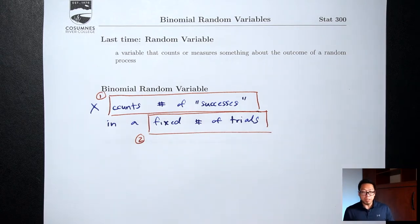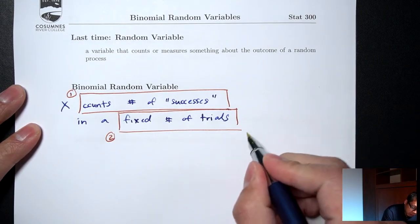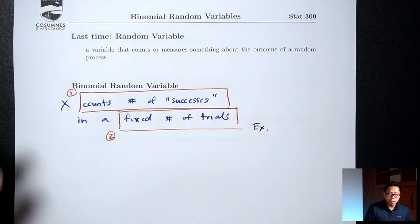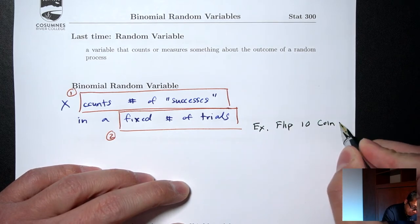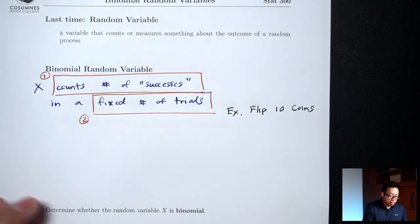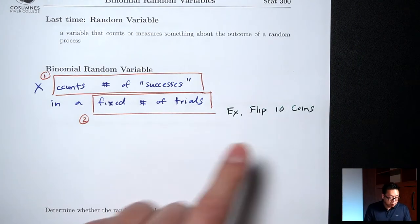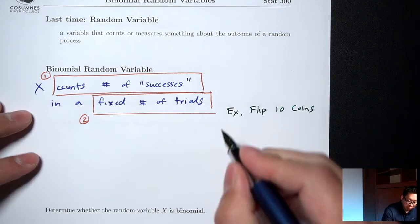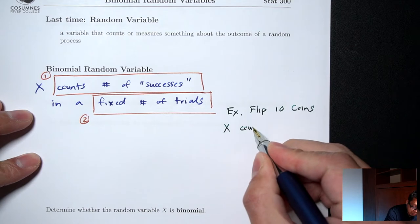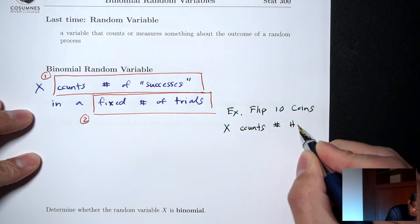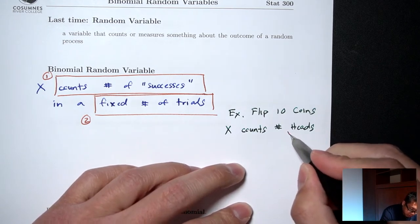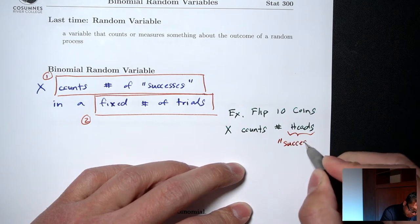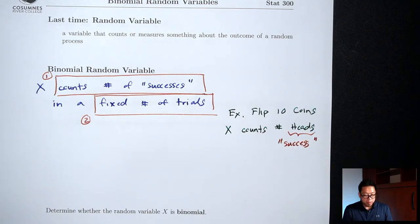Let me give you two examples of binomial random variables. The first example involves flipping coins. Say I flip 10 coins. Flipping coins is my random process — I'm doing it a fixed number of times, a fixed number of trials. What is it that I'm counting? Say I'm counting the number of heads. Getting heads here is my quote-unquote success.